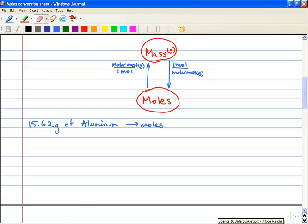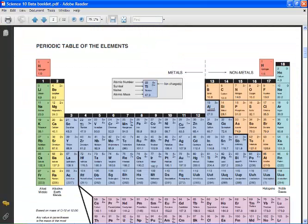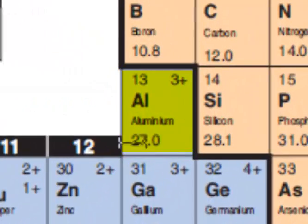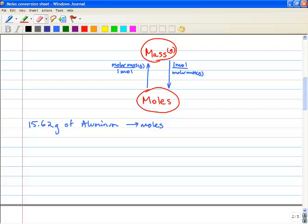And we find our molar mass by looking on the periodic table, and if you look over at aluminum, one mole of aluminum weighs 27 grams. All right, so let's set this up.